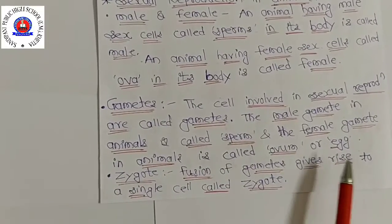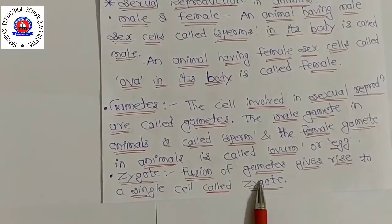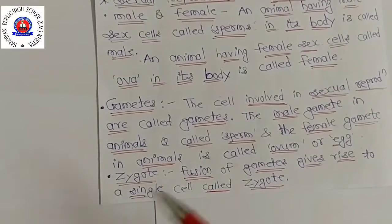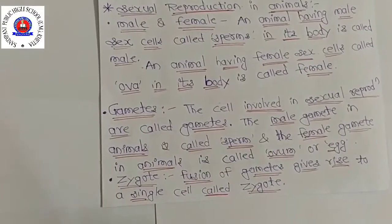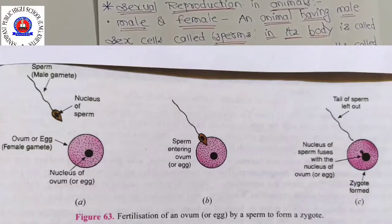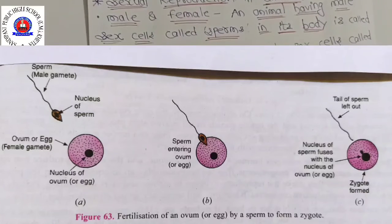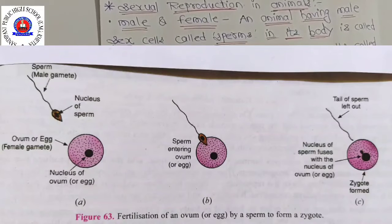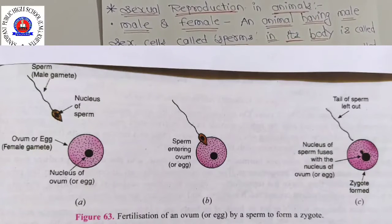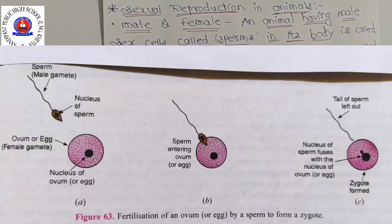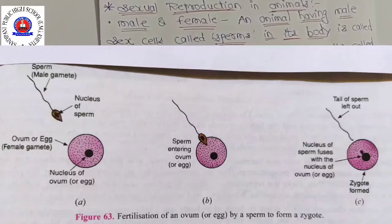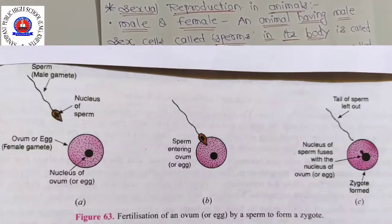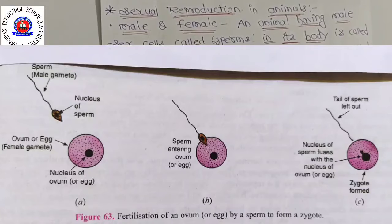Fusion of gametes gives rise to a single cell called the zygote. The cell formed by the fusion of male and female gametes is called the zygote. In the simplest terms, a zygote is a fertilized ovum or fertilized egg. All multicellular animals start their life from a single cell called the zygote through sexual reproduction.